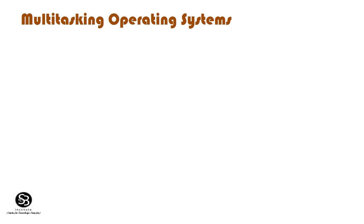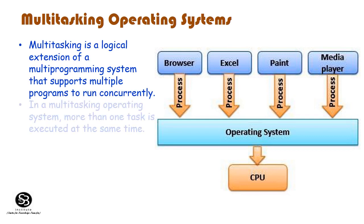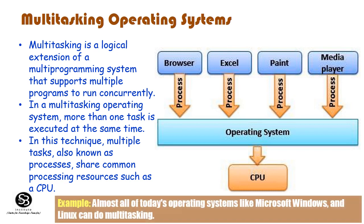Multi-Tasking Operating Systems: Multi-tasking is a logical extension of a multi-programming system that supports multiple programs to run concurrently. In a multi-tasking OS, more than one task is executed at the same time, and multiple tasks share common processing resources such as the CPU. Examples include Microsoft Windows and Linux. When you open a web browser and then open Excel, Word, or Paint at the same time, you are causing the OS to do multi-tasking.